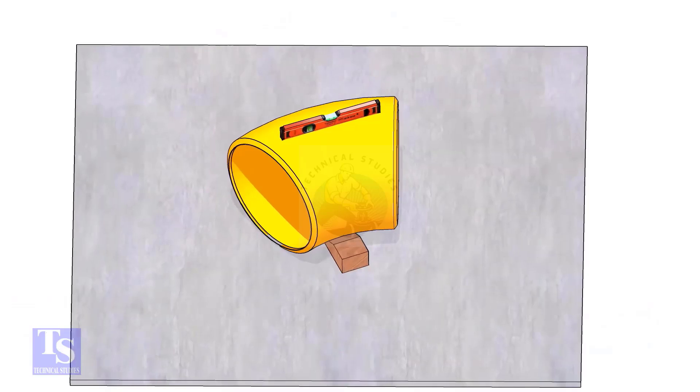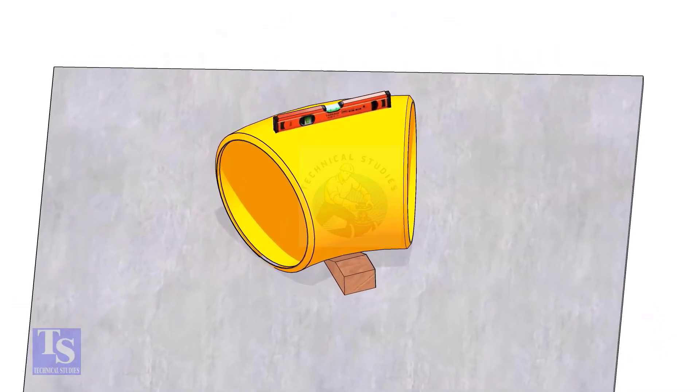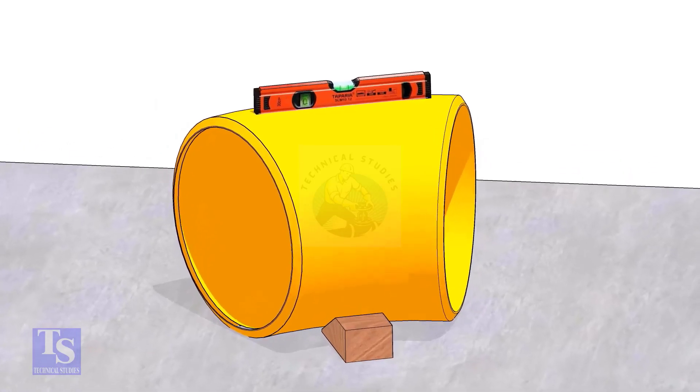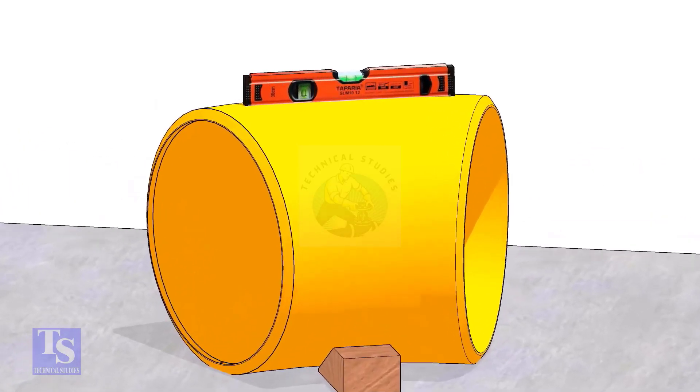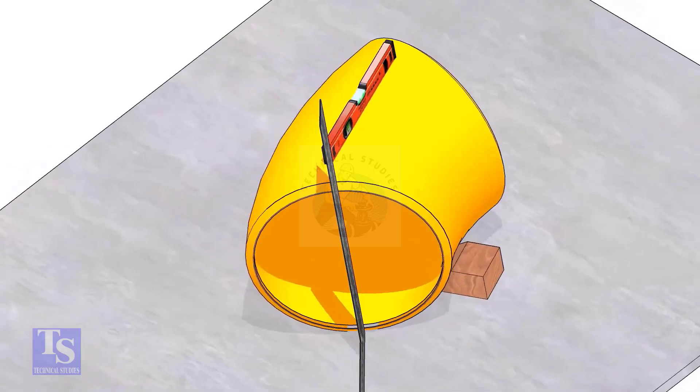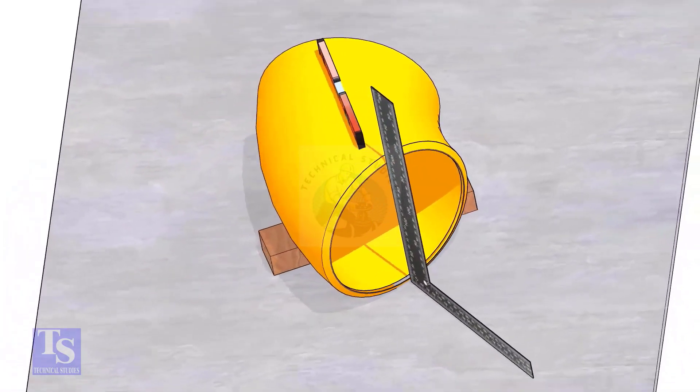Put the elbow on a straight and leveled plate. Correct the top level of the elbow. Make the faces of the elbow right angle to the plate. Put packing on both sides of the elbow to fix the position of the elbow.